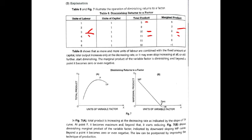When a fourth unit of labor is applied, the marginal product is one and total product is eleven. When the fifth unit of labor is applied, the marginal product becomes zero and total product remains constant — no change. When a sixth unit of labor is applied, the productivity becomes negative and total product starts to decline.